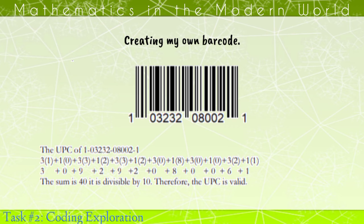And then, to check this code, we need to multiply by the number pattern which is 3-1-3-1-3-1 and so on. After getting the product, we add all the products to get the sum. The sum is 40. It is divisible by 10. Therefore, the UPC is valid.